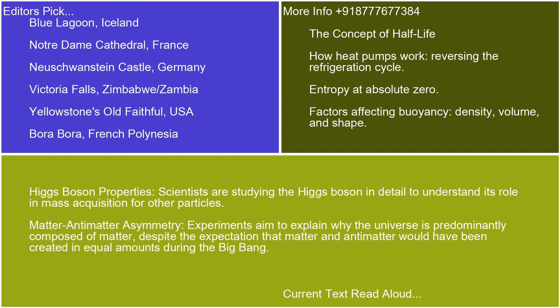Matter-antimatter asymmetry: experiments aim to explain why the universe is predominantly composed of matter, despite the expectation that matter and antimatter would have been created in equal amounts during the Big Bang.